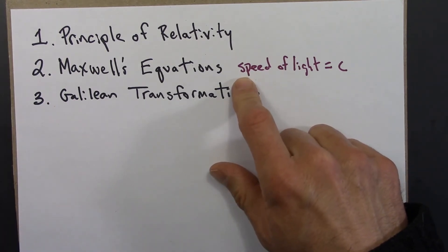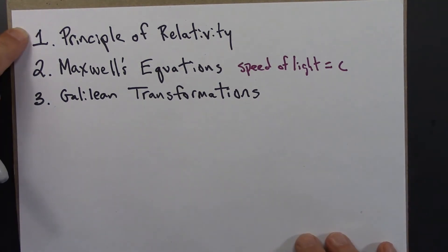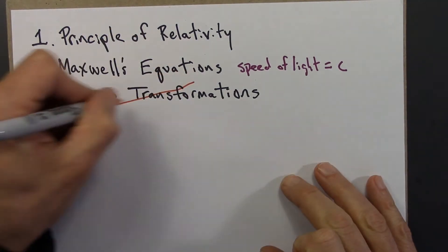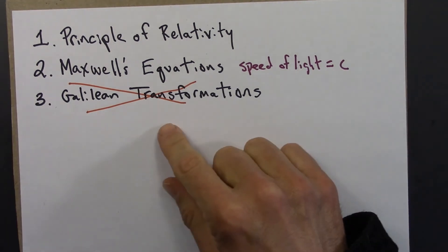So Einstein takes a different approach. He says that the principle of relativity is correct, and that Maxwell's equations are correct, and that the problem is with the Galilean transformations. And this seems crazy. What could possibly be wrong with the Galilean transformations?